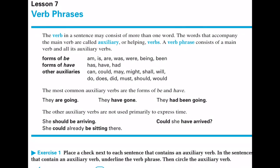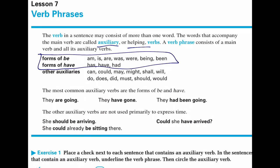Finally, verb phrases. A verb in a sentence may consist of more than one word. We have our main verb, and then in front of that we have auxiliary, or helping, verbs. The first group — forms of be and have — are probably the most common auxiliary verbs, and they help to express time: they are going, or they have gone, they had been going. There are many different cases — past progressive, past continuous, etc. — and these auxiliary verbs help to distinguish exactly when a particular verb started and whether it's ongoing or not.